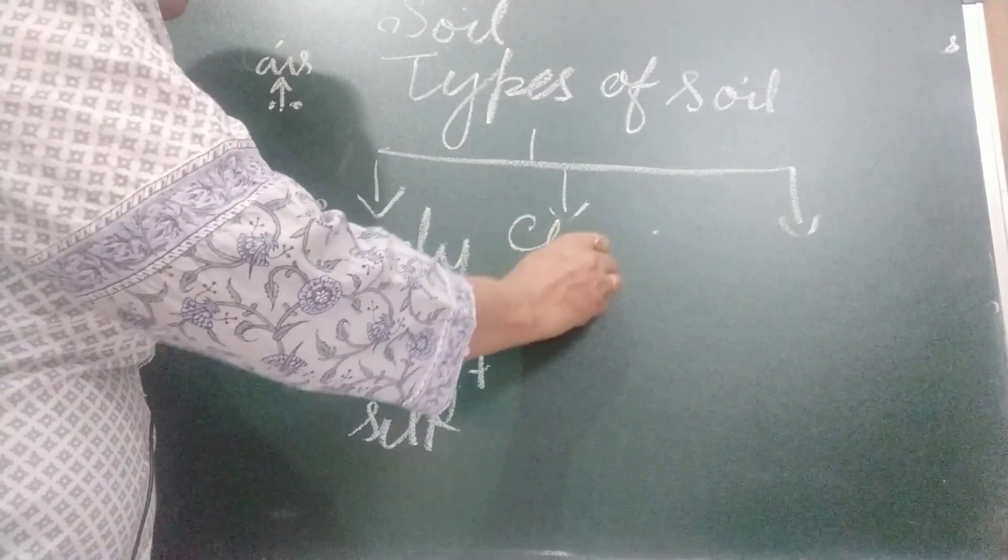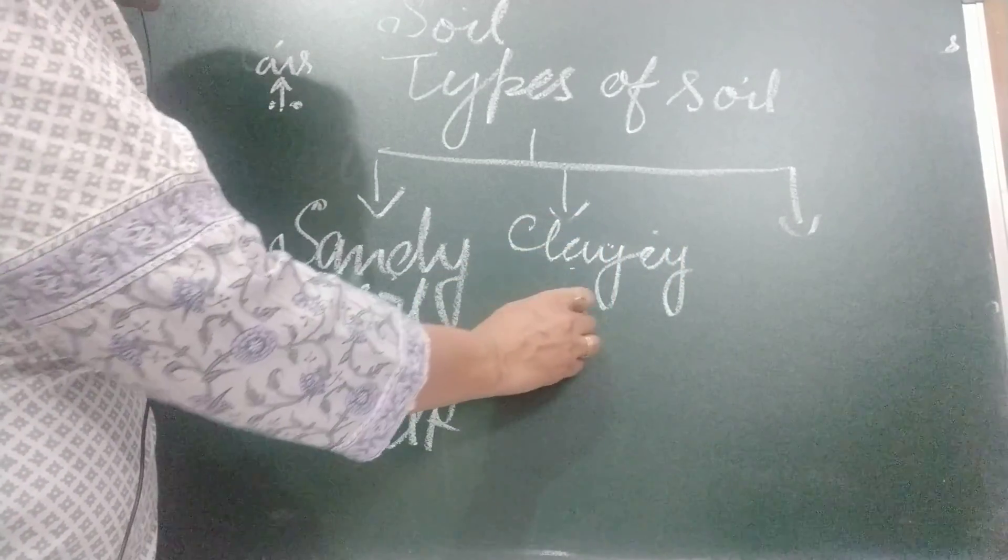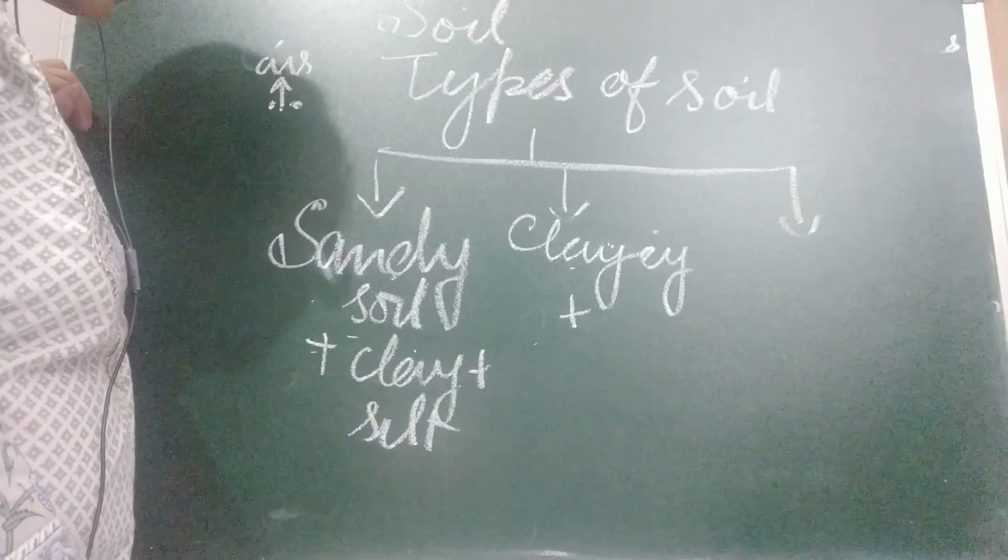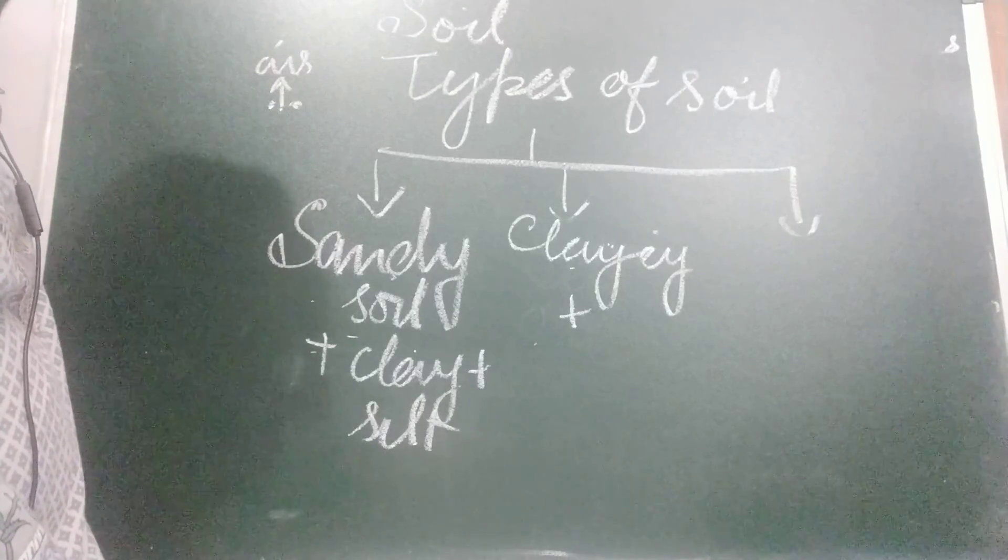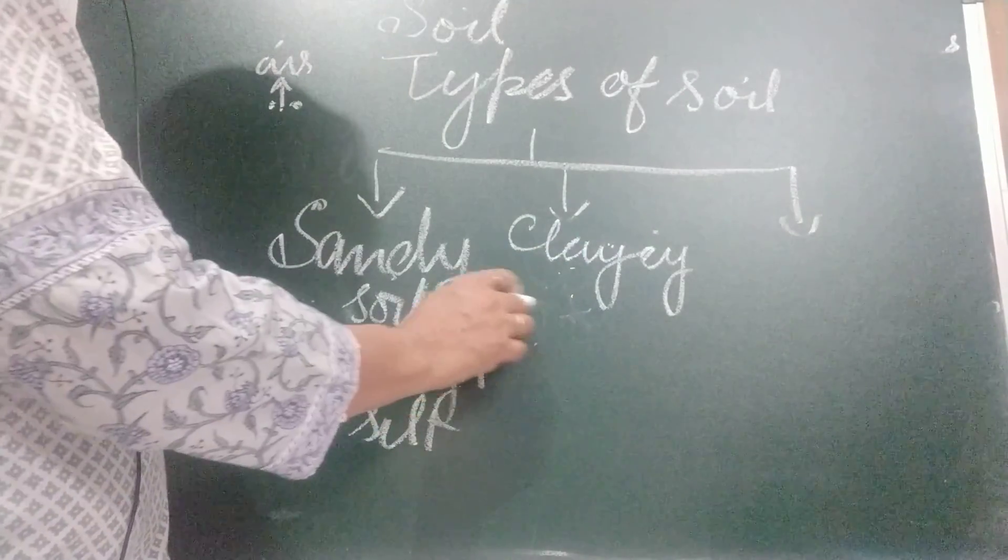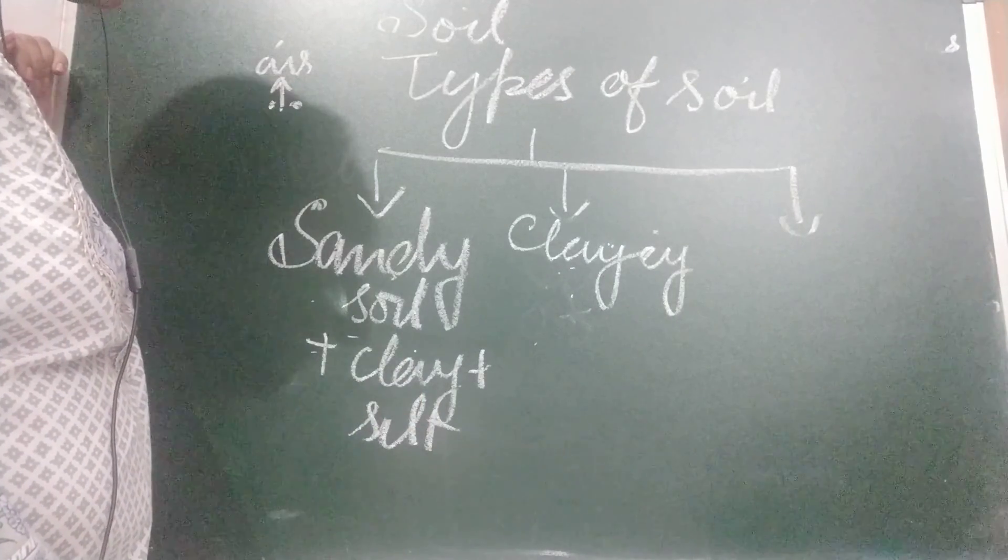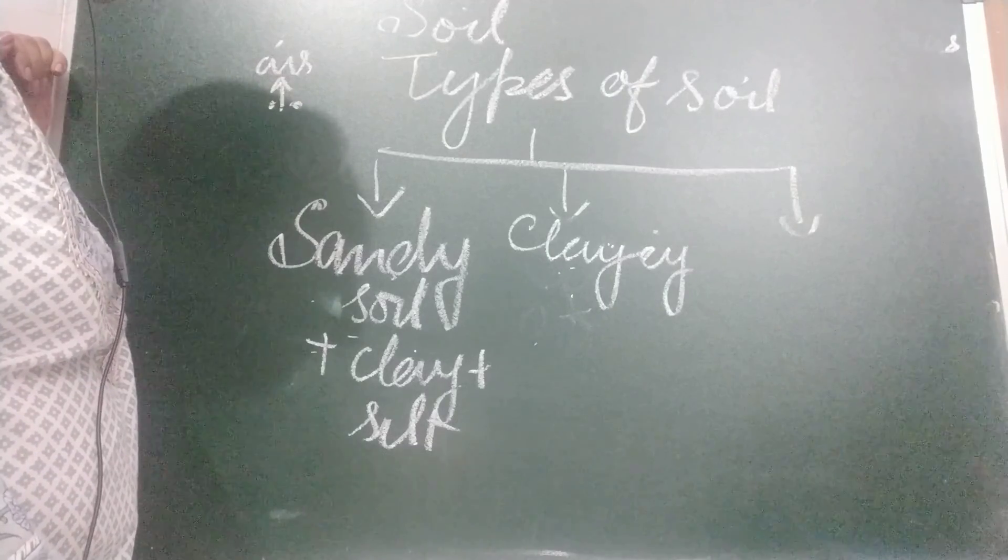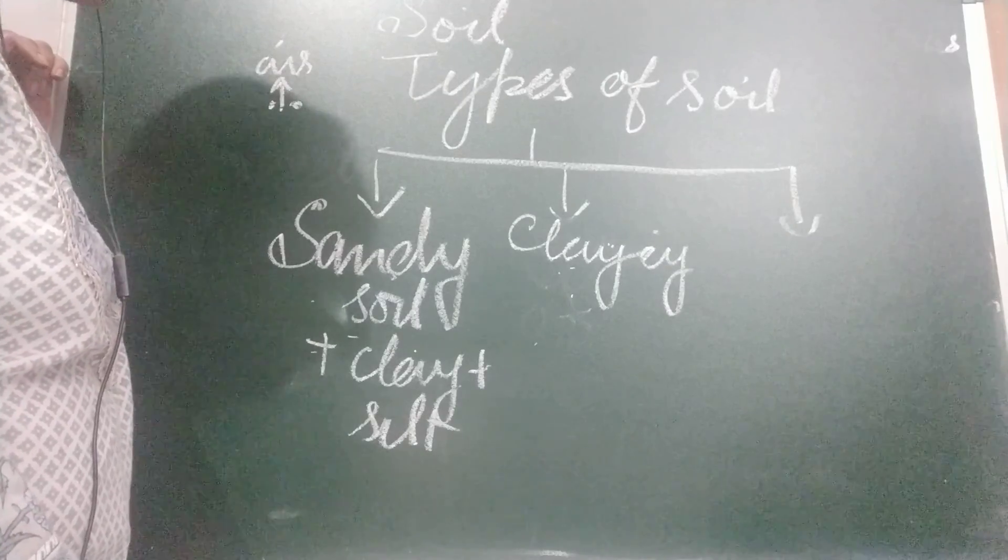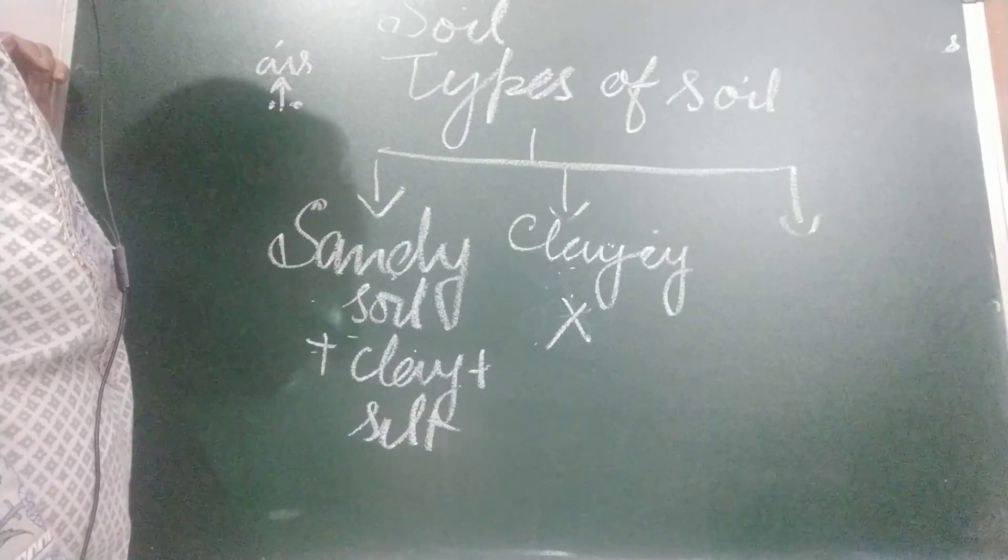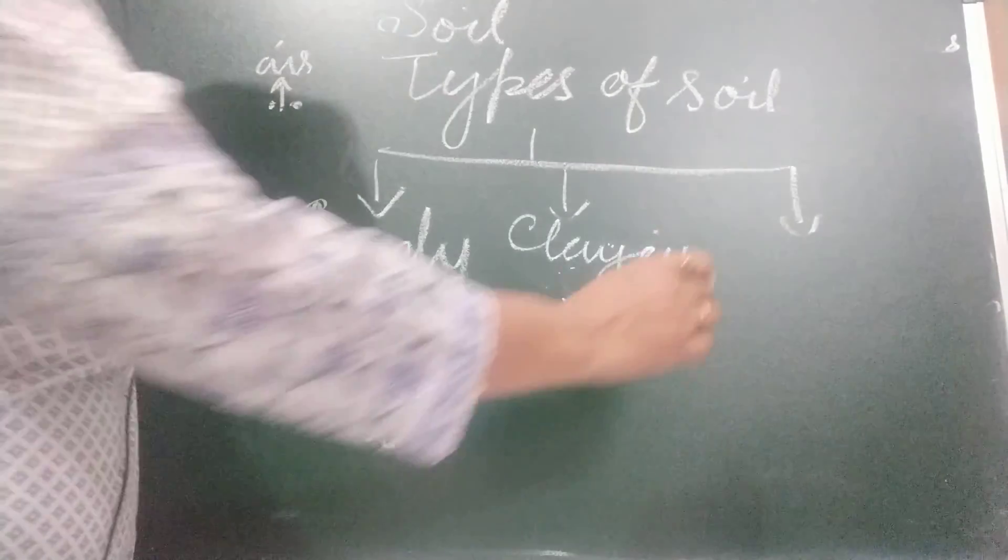Now, next is clayey soil. You know the particles are very small of clay. More clay is there and less sand and silt. It mostly contains clay. Water drains through this type of soil very slowly. Because the particles are very small and they are tightly packed. And this type of soil is not able to trap enough air because space is not there for the roots of plants. So, it is not good for plants. It is used for making pots and all.